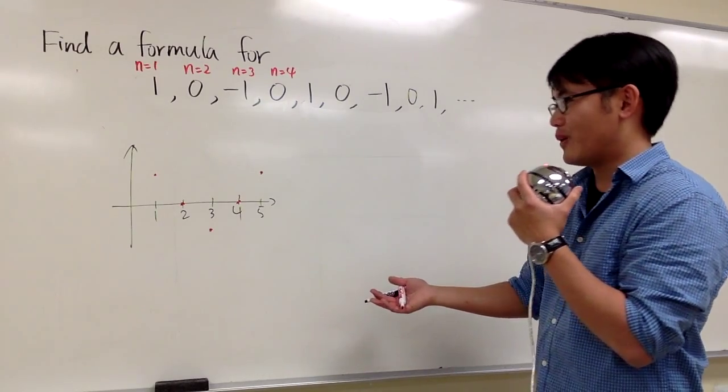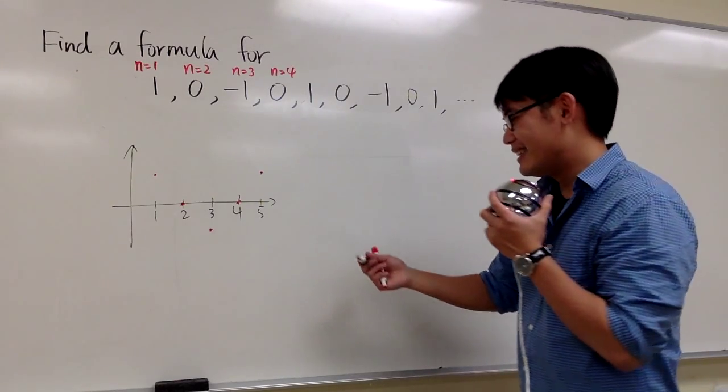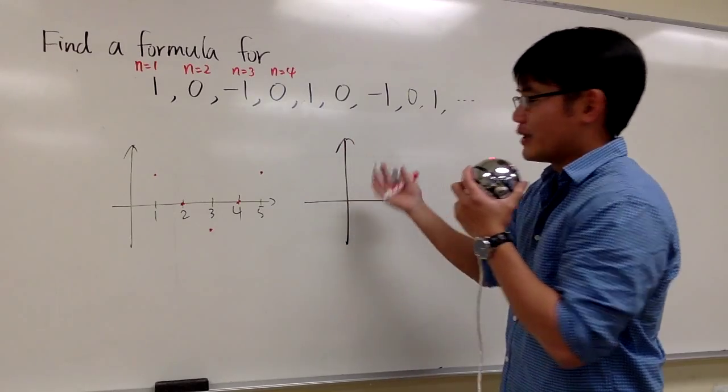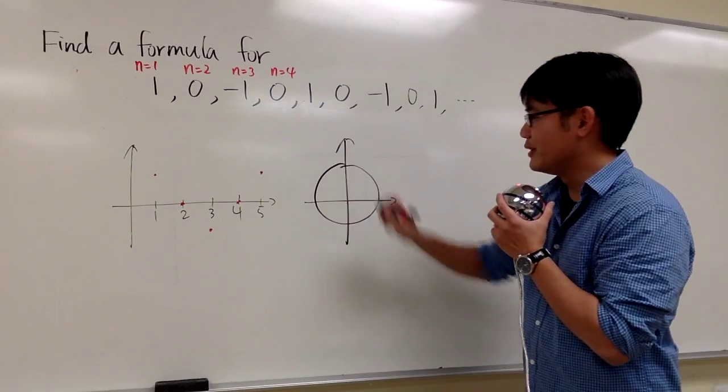And which one are we going to use, though? Are we going to use the sine or cosine? It depends on how you want to do it. And let me just look at this picture instead. We are kind of running around a circle, and we are running around the unit circle.